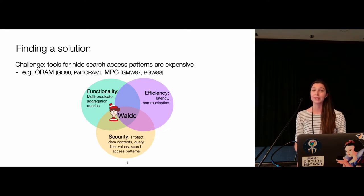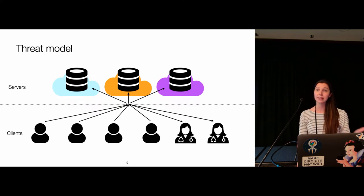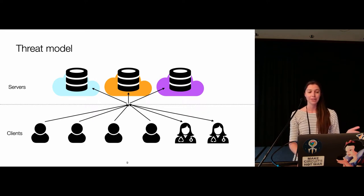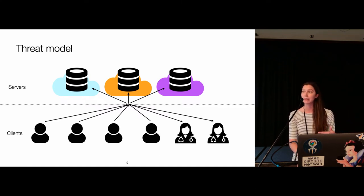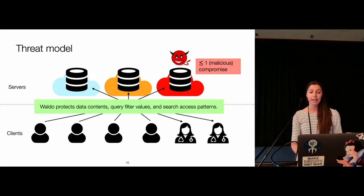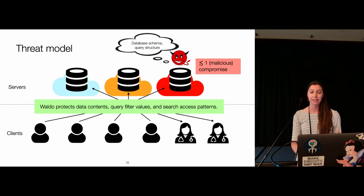We present Waldo, which achieves all three of these. Our threat model considers three non-colluding servers deployed in different trust domains, such that compromising one does not straightforwardly compromise the others. We have clients interacting with these servers — in the remote patient monitoring setting, patients upload data and doctors query it. We can tolerate at most one malicious compromise, operating in the three-party honest majority setting. In this setting, Waldo protects data contents, query filter values, and search access patterns. The attacker is allowed to learn the database schema and query structure.